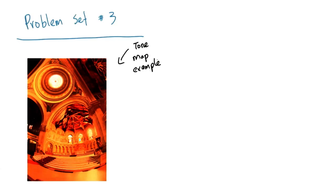In problem set number three, you will be implementing a parallel algorithm for tone mapping. Tone mapping is the process of mapping an image with a wide range of brightness values into an image with a narrow range of brightness values.